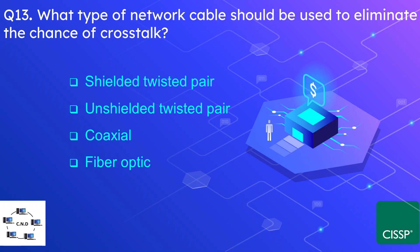Question number thirteen: what type of network cable should be used to eliminate the chance of crosstalk? The options are shielded twisted pair, unshielded twisted pair, coaxial, and fiber optic. The correct answer is fiber optic, because fiber optic cable does not operate on electricity and therefore does not produce EMI that results in crosstalk.